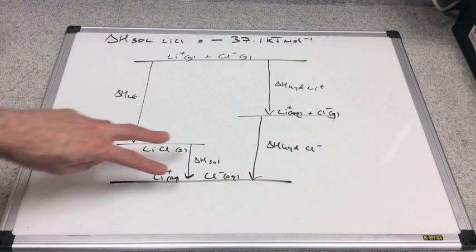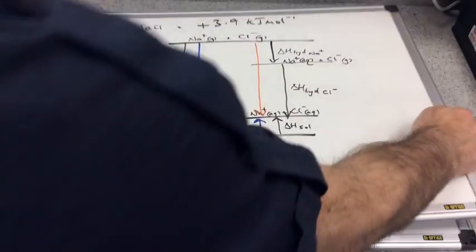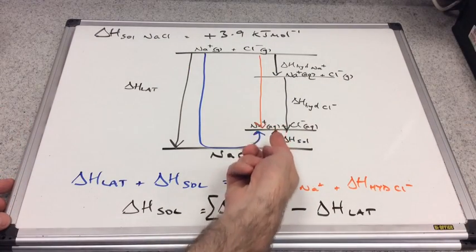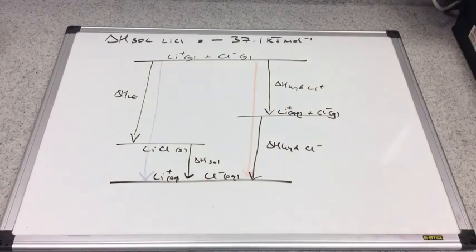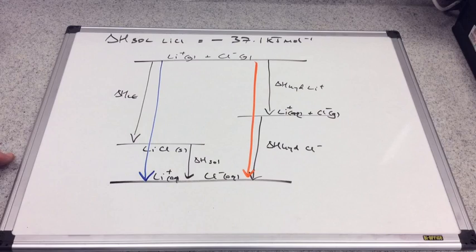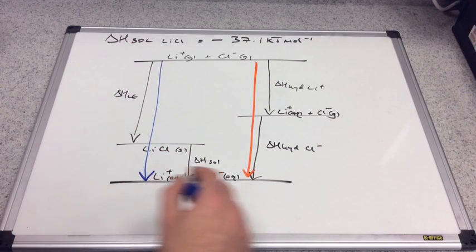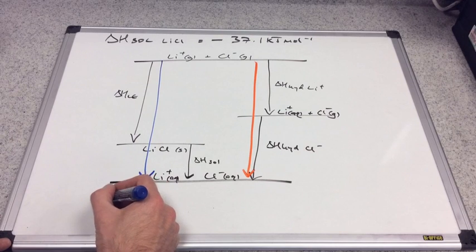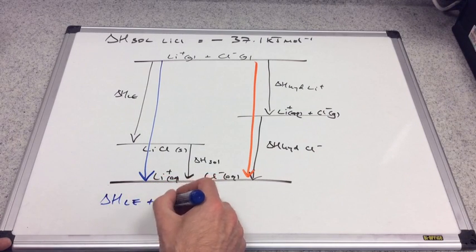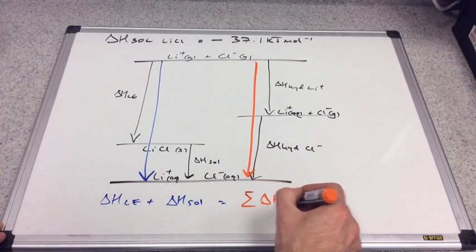The cycle looks slightly different, and hopefully you can appreciate why — because this is an exothermic process, whereas the sodium chloride one was endothermic, so the solution arrow goes up in that case. There are the two routes — the blue route and the orange route. Hess's law treatment is exactly the same whether it's exothermic or endothermic. So it's: delta H LE plus delta H sol equals the sum of delta H hyd.